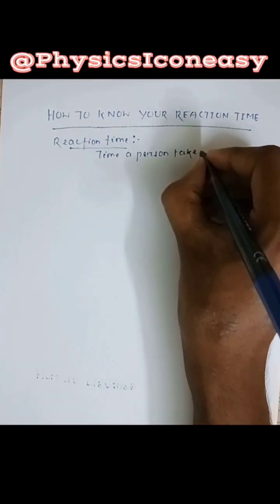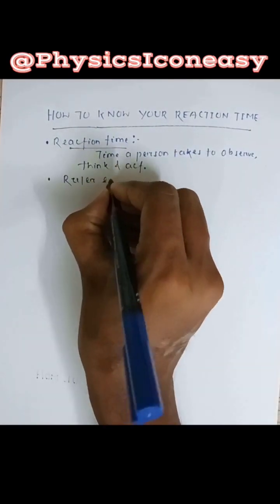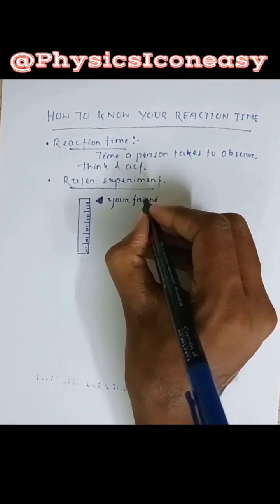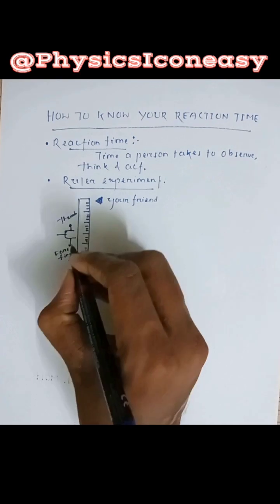One can determine his or her reaction time by ruler experiment. In this experiment, take a ruler and ask your friend to drop it vertically through the gap between thumb and forefinger.